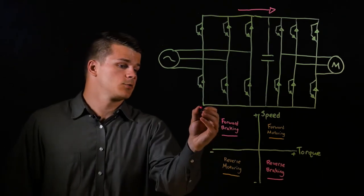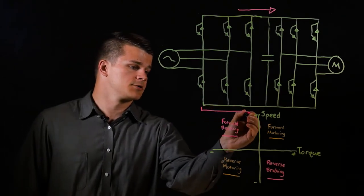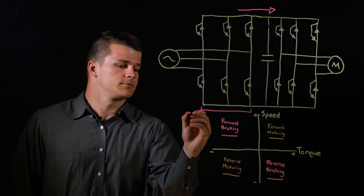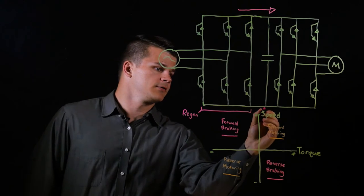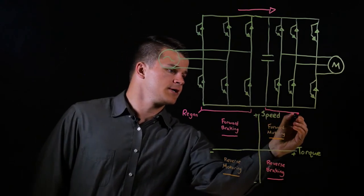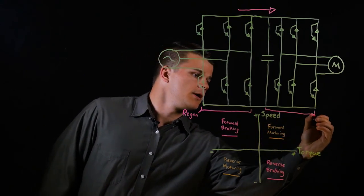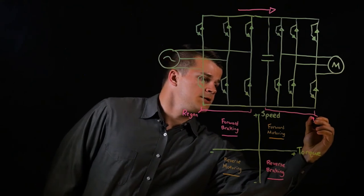A line regen unit essentially replaces the input rectifiers to the drive. So you'd have your line regen portion of the topology here, and then on the right-hand side, you would keep your standard DC bus and output IGBTs of the drive.